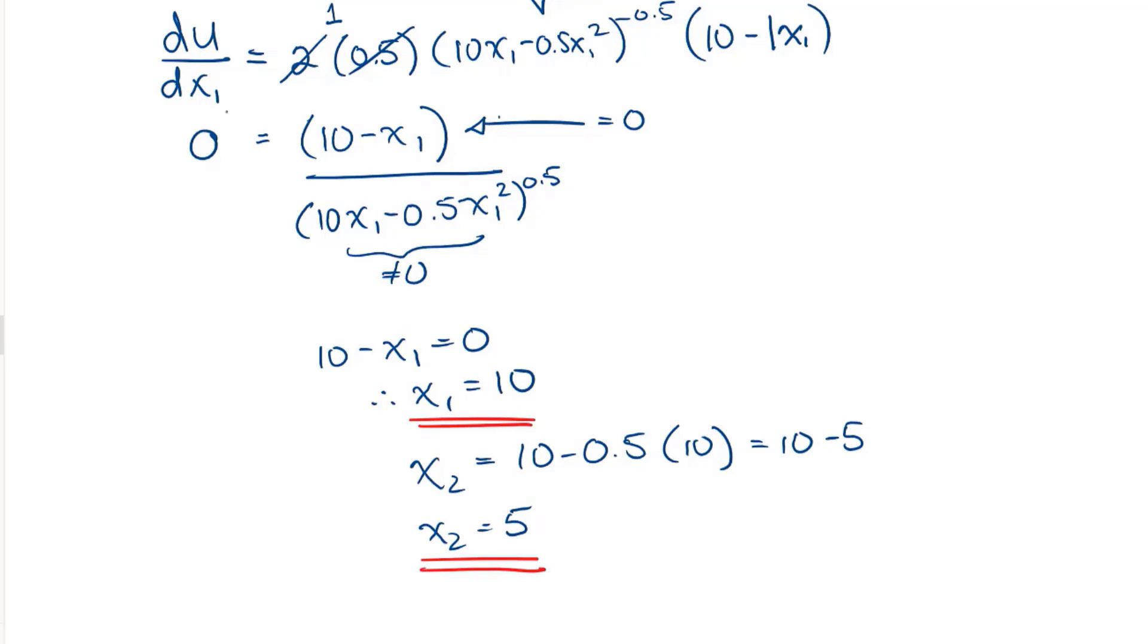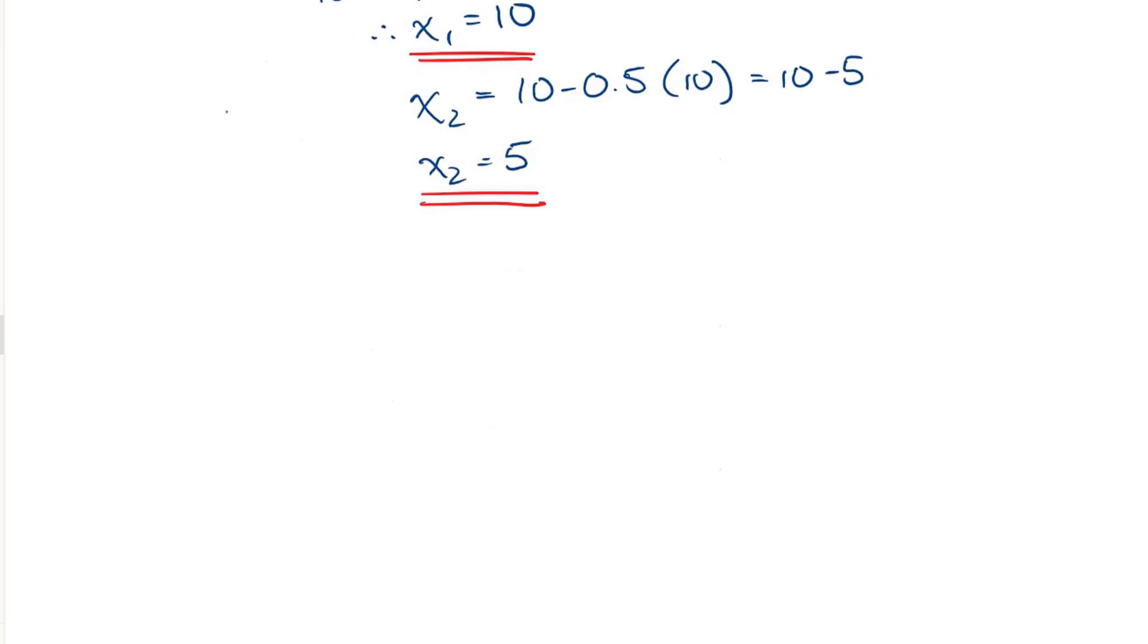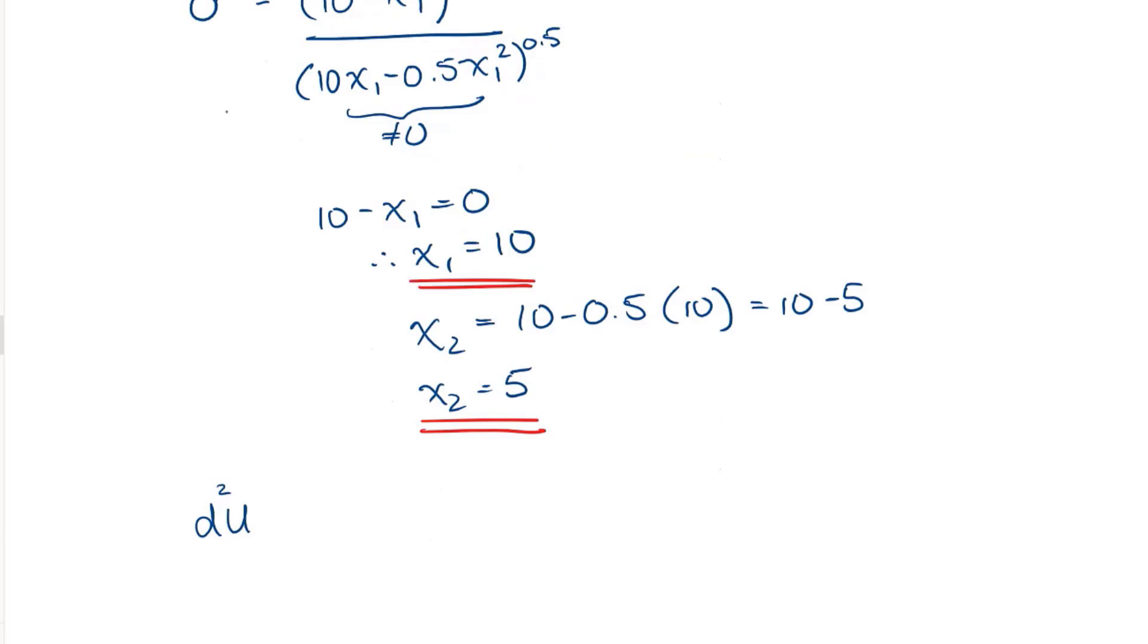Okay, so there's my X1 and my X2 values at the critical point. To confirm that it's a maximum, I would take the second derivative, d squared u by dx1 squared. I'm not going to get into that part too much right now. I'm just going to let you know that that's what we would do to confirm it's a maximum.